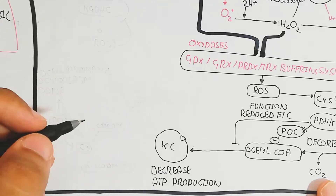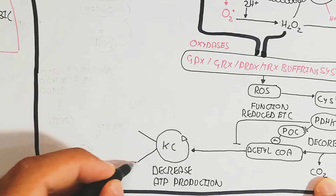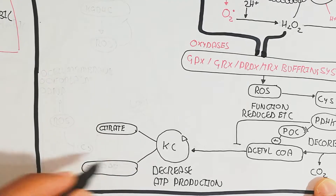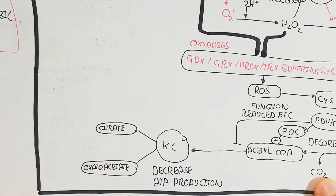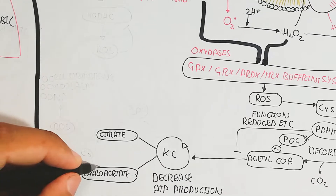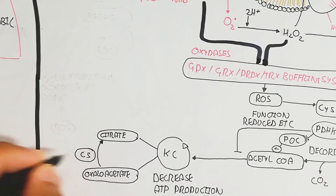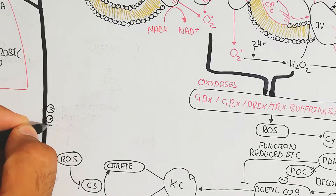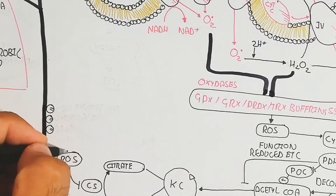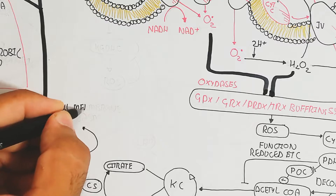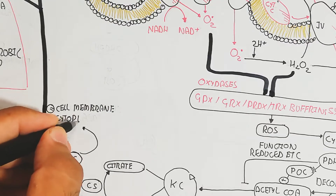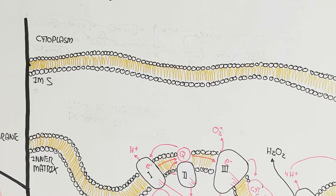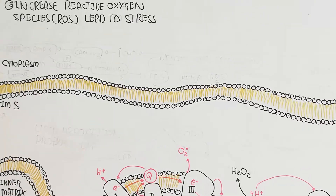Reactive oxygen species inhibit acetyl-CoA production through inhibition of PDHK. On the other hand, oxaloacetate converts into citrate in the Krebs cycle through citrate synthase enzyme, but this is also inhibited by reactive oxygen species. This leads to DNA damage, cytoplasmic damage, and cell membrane damage.